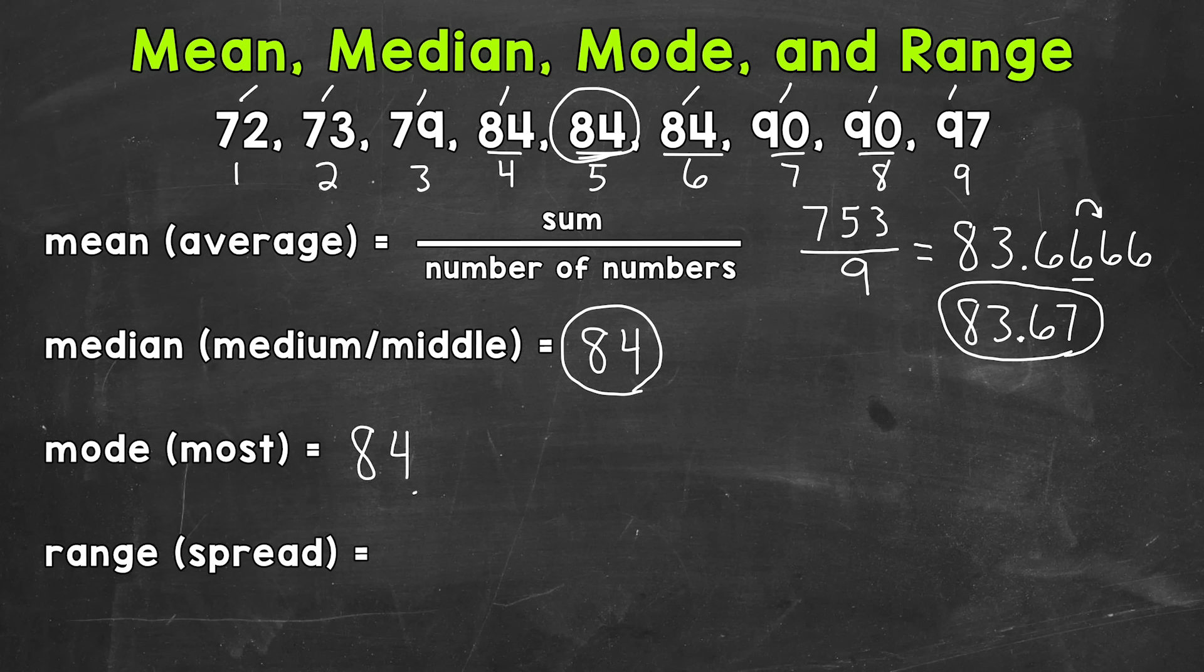So 84 again, mode is as simple as that. Whatever number occurs the most. Now you can have more than one mode. For example, if we had three 84s and then in our example, we also had three 90s, we can have two modes. We would have 84 and 90. But in this example, we only had one mode, which was 84.